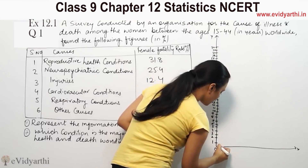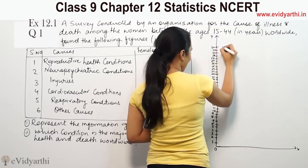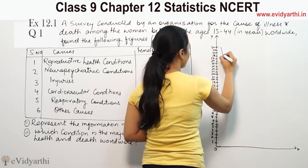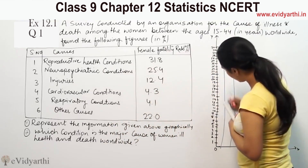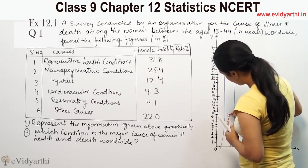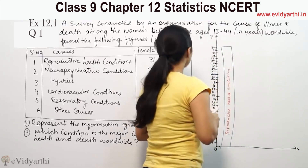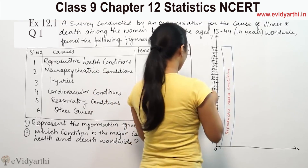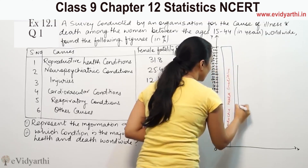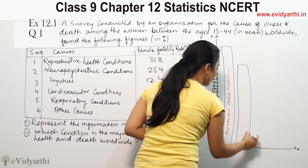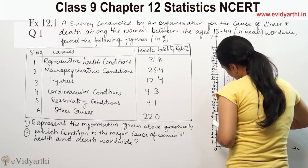31.8 will be somewhere around here on the graph. So this bar represents reproductive health conditions. The next one is neuropsychiatric conditions at 25.4. We place that value here — this is neuropsychiatric conditions.